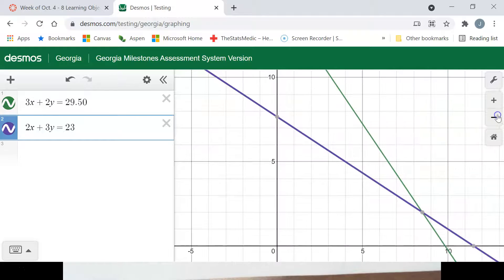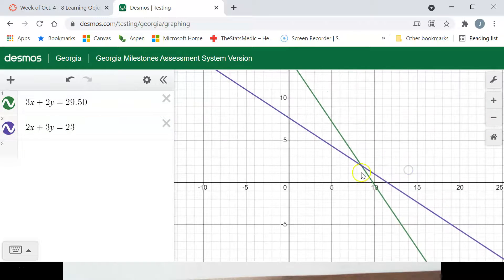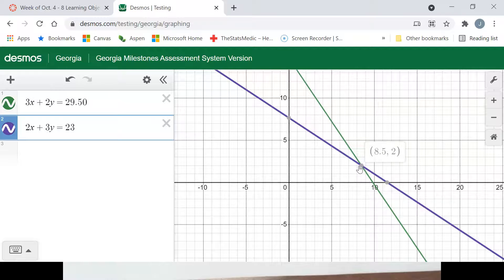So I'm just going to scroll out some so I can see where they cross. They cross right there at 8.5 and 2. So I'm going to write that down. 8.5 comma 2. That's the point where they cross. Now let's go back and think about this.